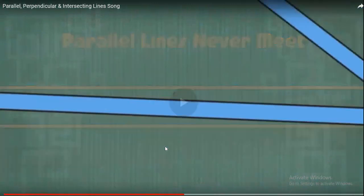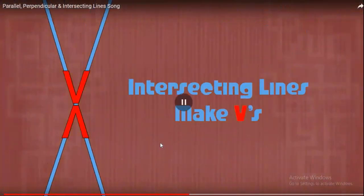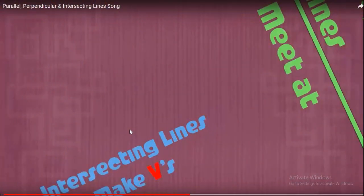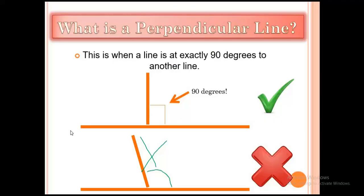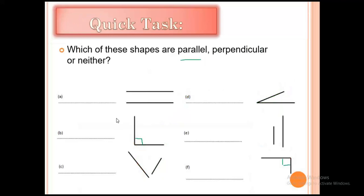We call that intersection. So: parallel lines never meet, intersecting lines look like a V, and perpendicular lines meet with a 90-degree angle. Now we will take a quick task.